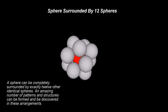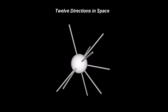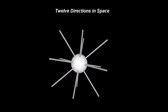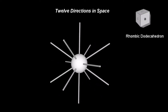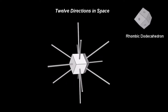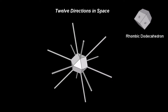To better see how this works, it is beneficial to consider lines radiating from the central sphere along these 12 directions. There are other geometrical solids that can be used to understand the pattern of these 12 directions. The best one available in our universe is the rhombic dodecahedron.